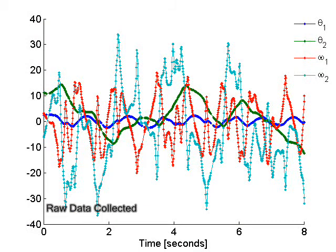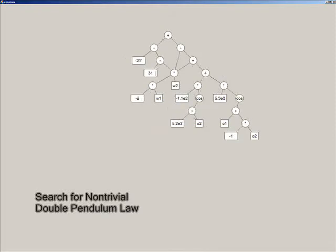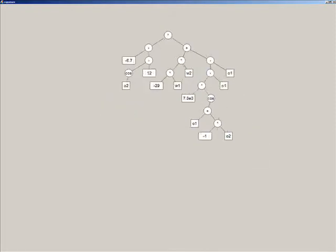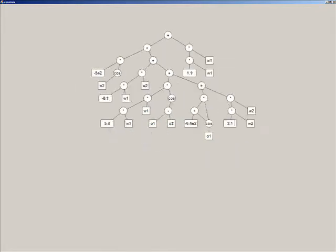Here is the data we collected using motion tracking of the two pendulum arms. Using this data, we again search the space of equations to detect an underlying law. The acyclic graph allows us to search both the structure of the equation and its parameters.